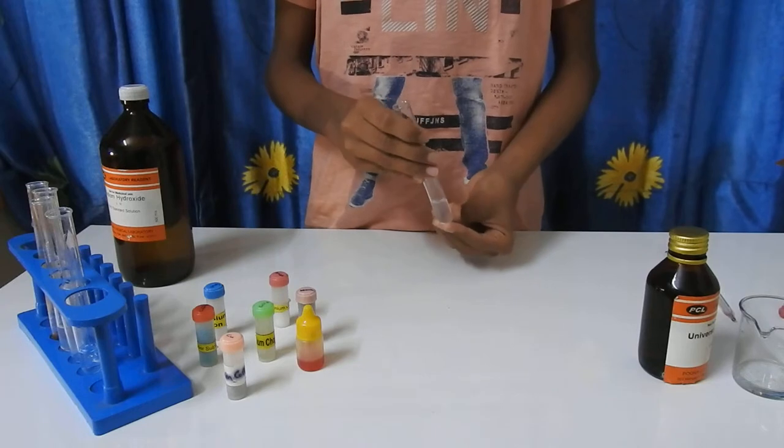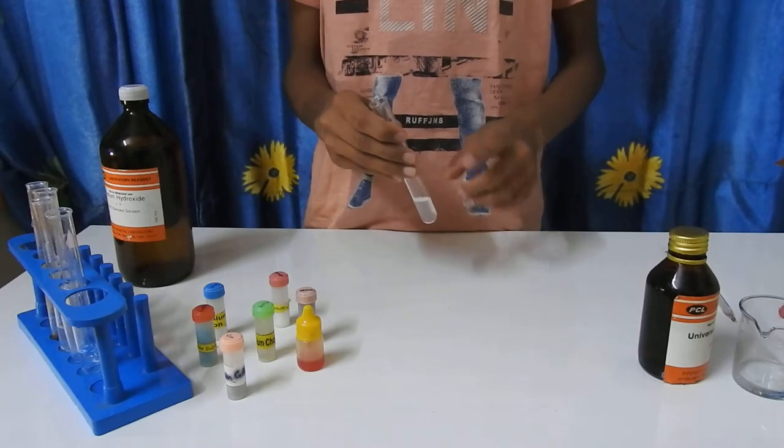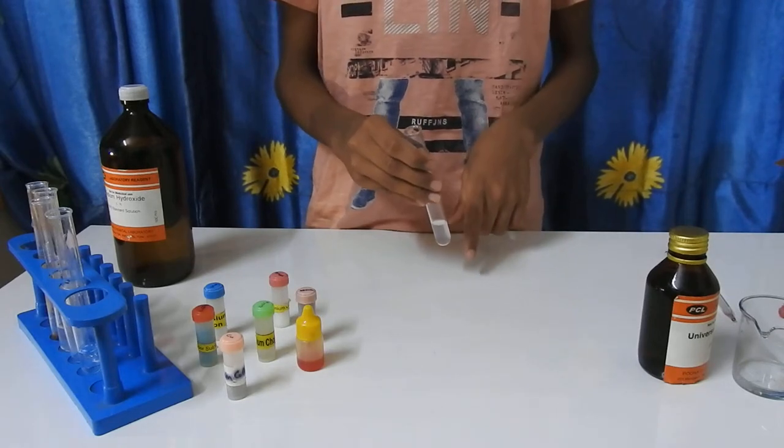Now we have produced our solution. We have to prove that this solution contains ammonia. In this solution, ammonia is combined with water to form ammonium hydroxide, which is liquor ammonia.